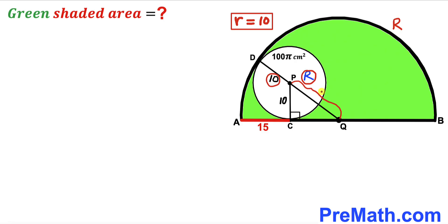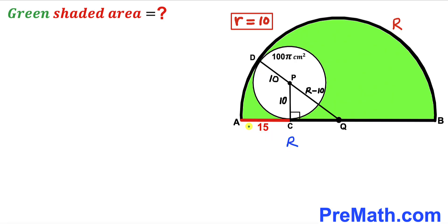We can write PQ = R − 10. Furthermore, AQ is the radius of the semicircle, so AQ = uppercase R. Since AC = 15, the length CQ = R − 15.